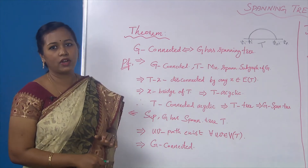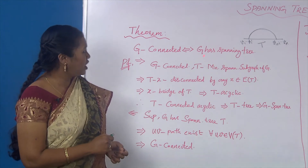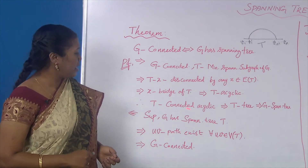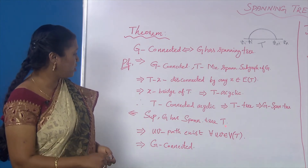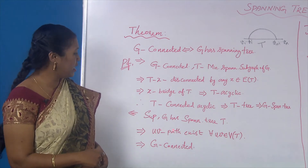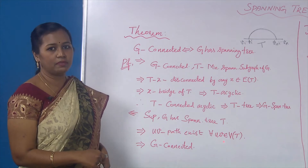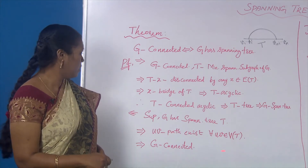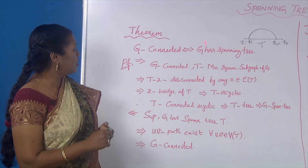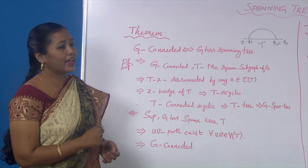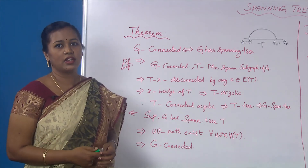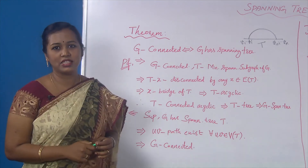For the second part, assume that G has a spanning tree; we have to prove that G is connected. If G has a spanning tree, then there exists a u-v path in the tree for every u, v belonging to the vertex set of T. From this it is quite obvious that G is connected. Thus, from G having a spanning tree, we have proved that G is connected, and that proves the theorem.